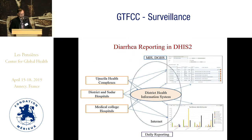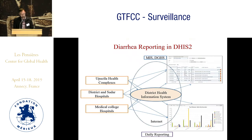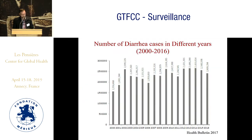All the information from different levels — health complex, district level, and medical college level — goes into the DHIS2 system centrally, and they can easily generate daily reporting. Since the Government of Bangladesh has had the AWD number since 2012, they have been maintaining this AWD case reporting system.